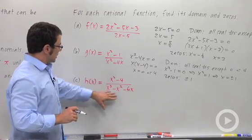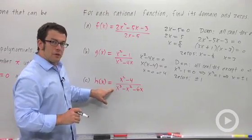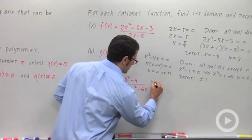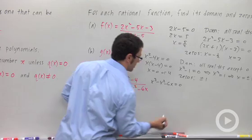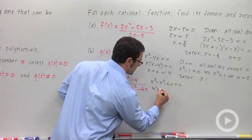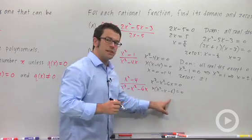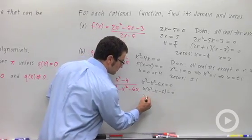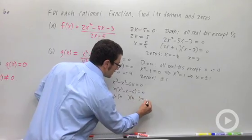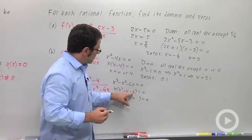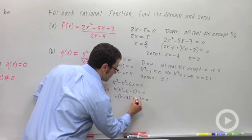Finally, let's look at this function. This denominator I can find the zeros by factoring. x cubed minus x squared minus 6x equals 0. So we get x times x squared minus x minus 6. And this can also be factored.